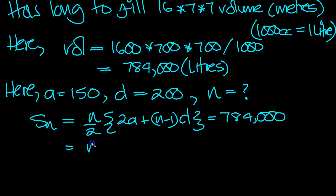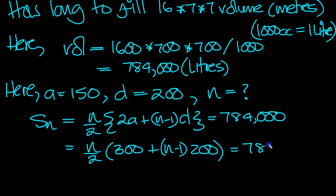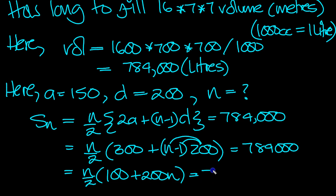So we'll get n over 2. I'll use a round bracket. 2a is 150, so 300. Plus n minus 1, times d, which is 200, equals 784,000. We've got n over 2. I'm going to expand this bracket in one fell swoop. So we've got 300. When we expand this bracket, we'll have minus 200. So that's 100. And then we'll have plus 200n equals 784,000.